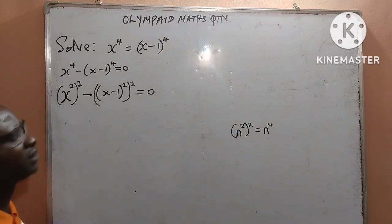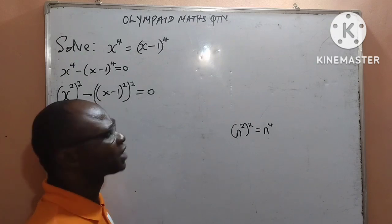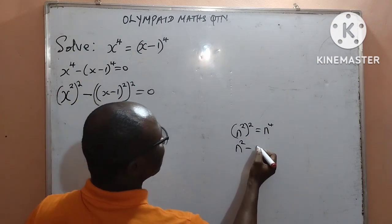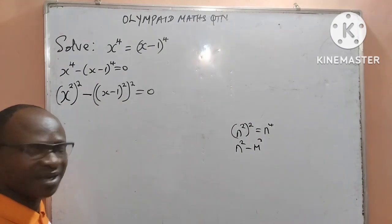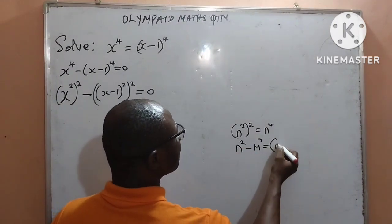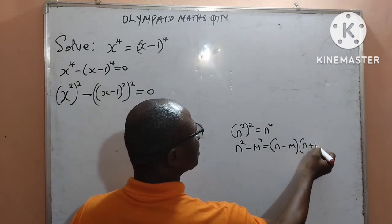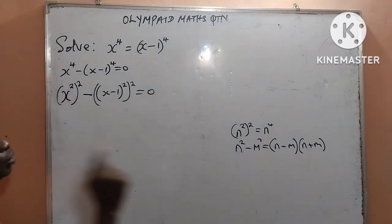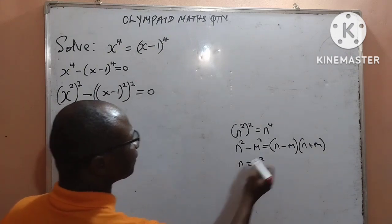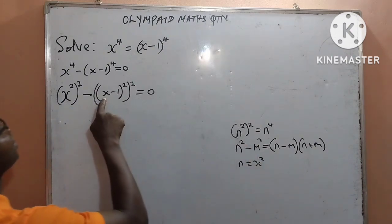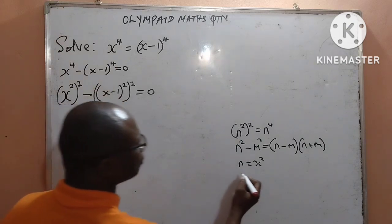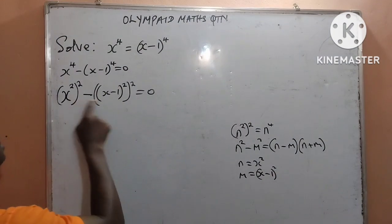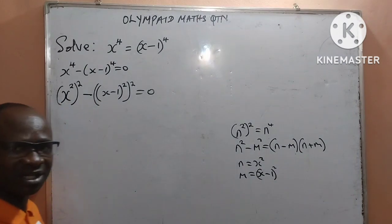If you look at it very well, you can agree with me that the difference of two squares can come in. That is, if I have n squared minus n squared, this is the difference of two squares, meaning I can write it as n minus n, times n plus n. So, let my first n be x squared, and let my second n be x minus 1 squared.